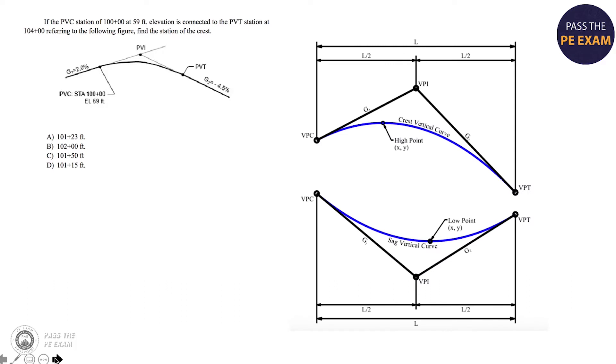Here's our problem. Here are the two types of vertical curves. You have a crest vertical curve, which we have in the problem here, and you have a sag vertical curve, one having a high point, one having a low point. What they're asking us to solve is to find the station of the crest point or the high point.